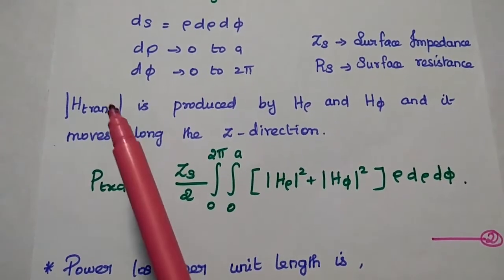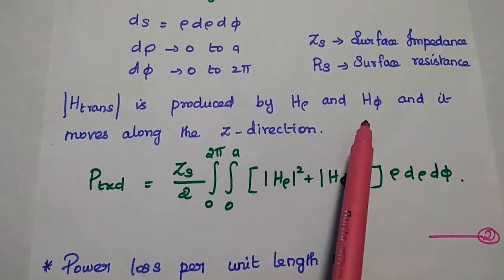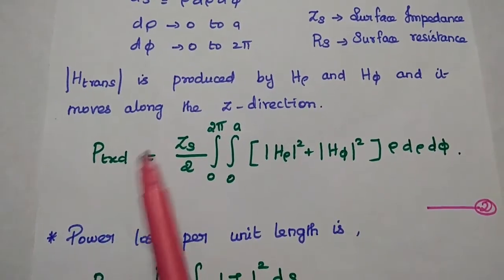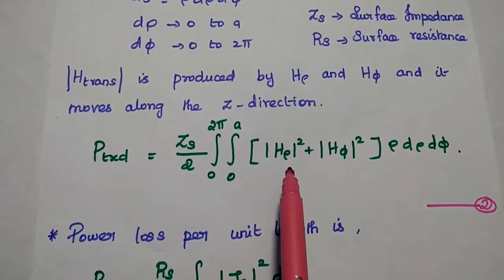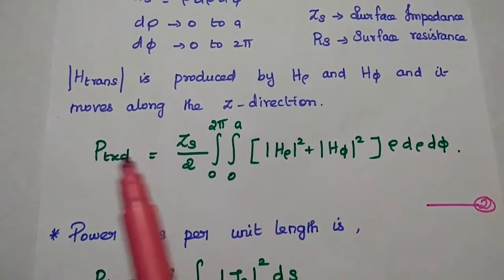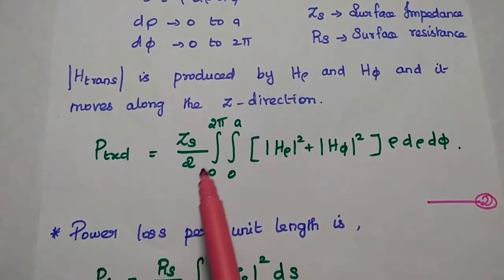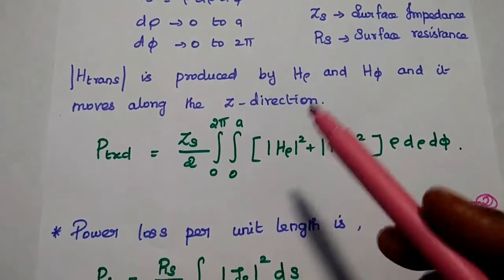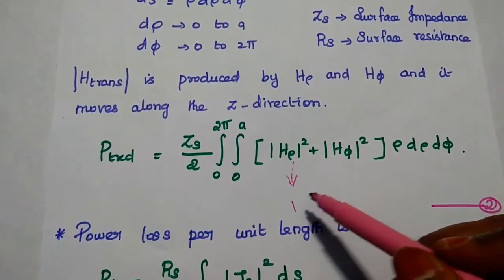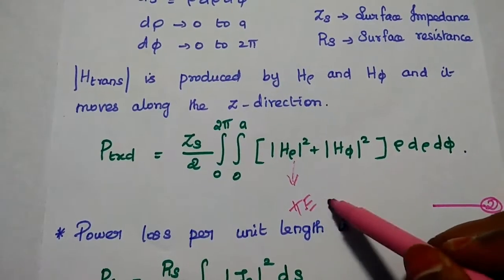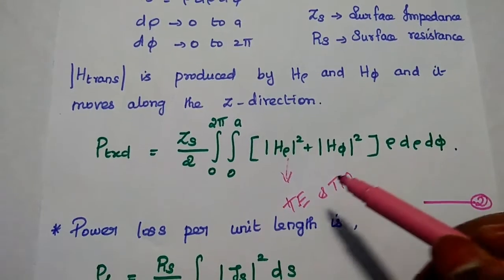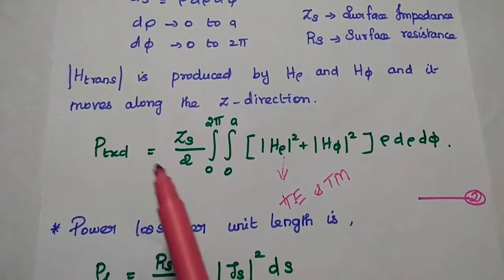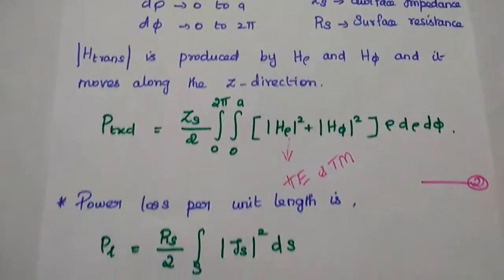The transmitted magnetic field in the Z direction is produced by the rho component and phi component of the magnetic field. So the transmitted magnetic field is the addition of the rho component and phi component. The total transmitted power equals ZS/2 times the integration from 0 to 2pi and 0 to A of (H_rho squared plus H_phi squared) rho d_rho d_phi. We have already derived the values of H_rho and H_phi for TE and TEM waves in the previous lecture videos. Substituting those values gives the exact transmitted power. Consider this as the second equation.